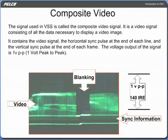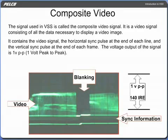The signal used in video security systems, VSS, is called the composite video signal. It is a video signal consisting of all the data necessary to display a video image. It contains the video signal, the horizontal sync pulse at the end of each line, and the vertical sync pulse at the end of each frame. The voltage output of the signal is 1VPP, 1 volt peak to peak.